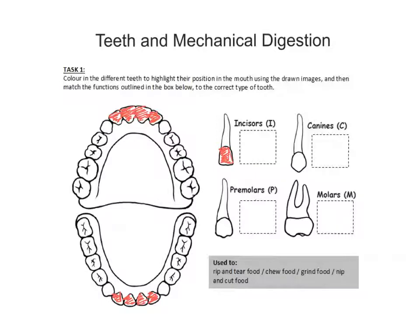Now let's put in the canines — I'll shade these in blue. The canines are at the sides of the incisors: these two here at the top of the upper jaw and the two here at the bottom of the lower jaw.